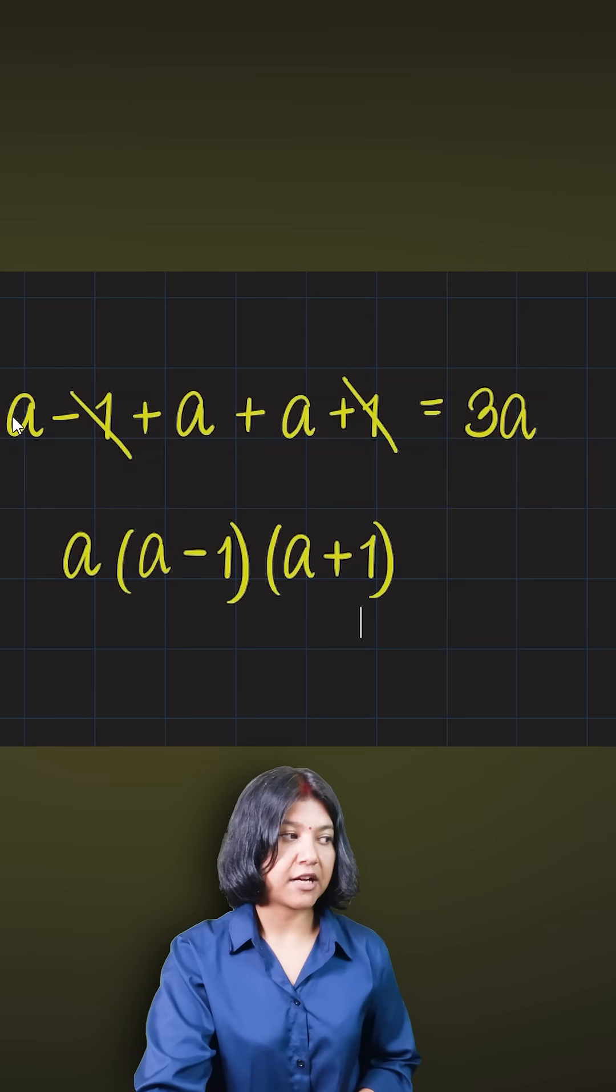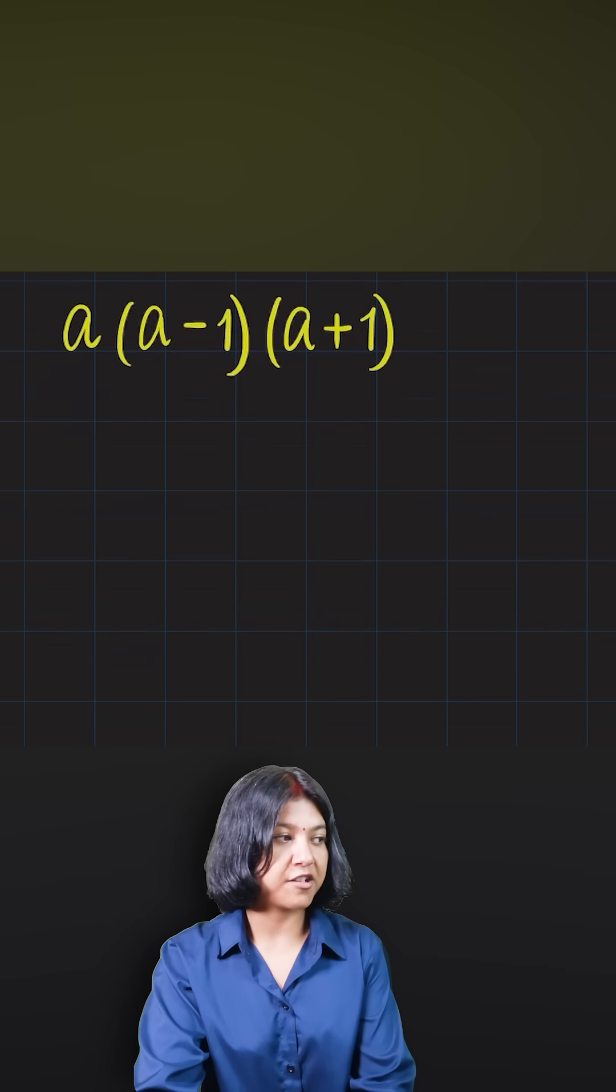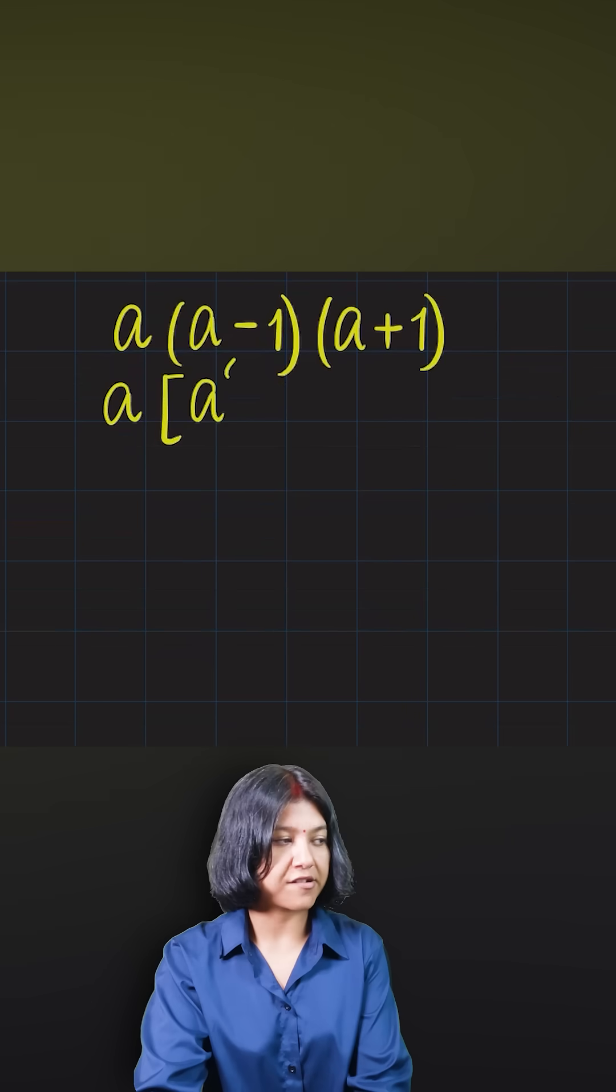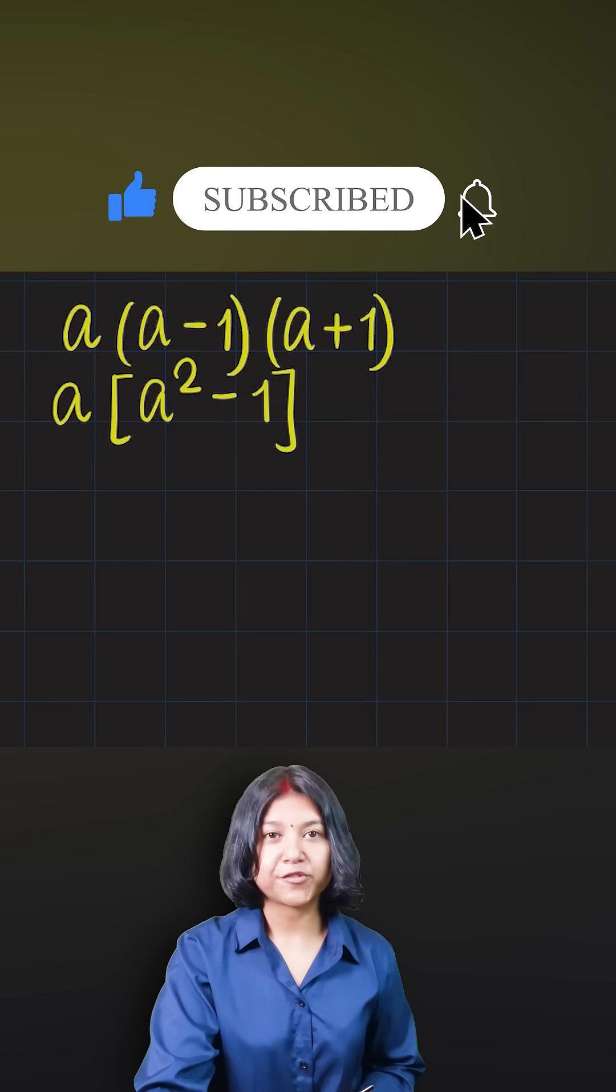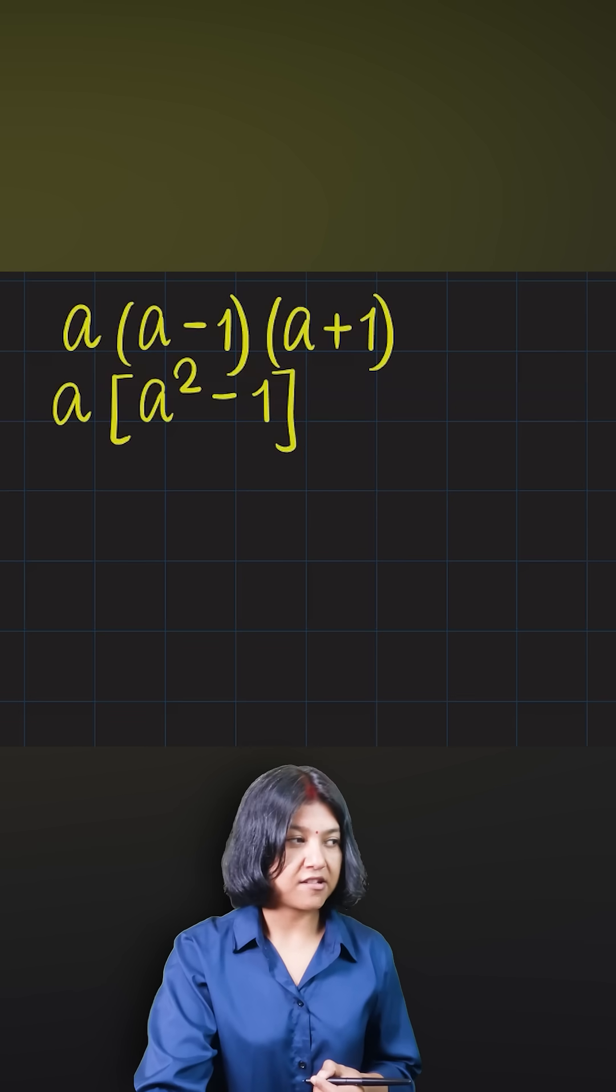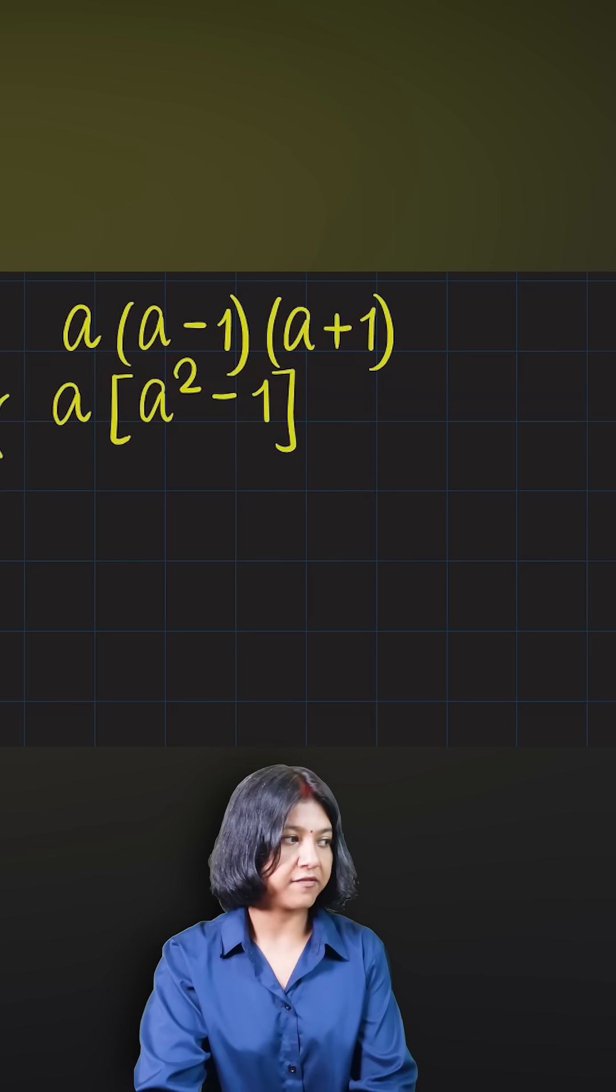So their product can be found out quickly by taking the sum and the difference. Product of sum and difference is just the difference of the squares, right? So a squared minus one. This is the product of three numbers. You can keep it as it is or you can just go ahead and simplify, which gives you a cube minus a.